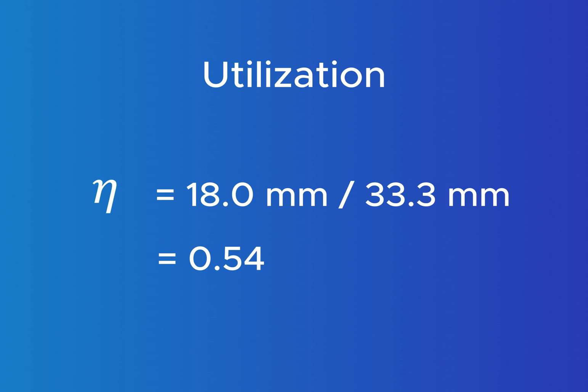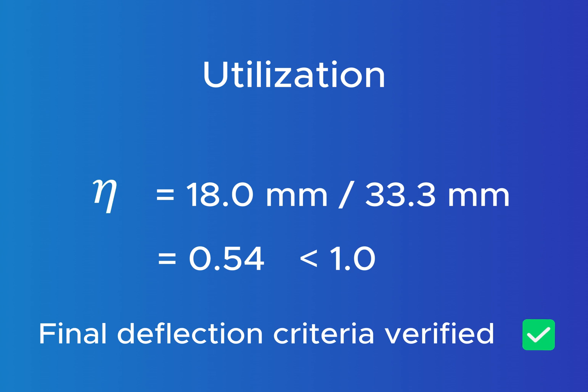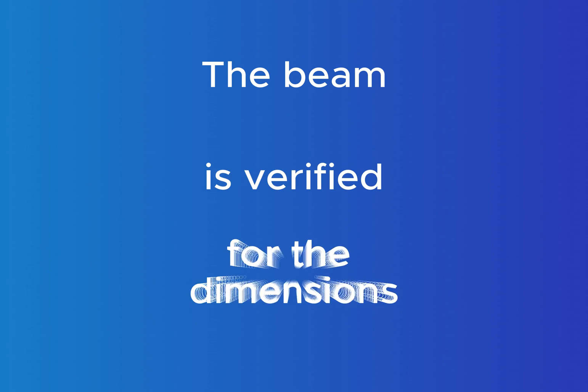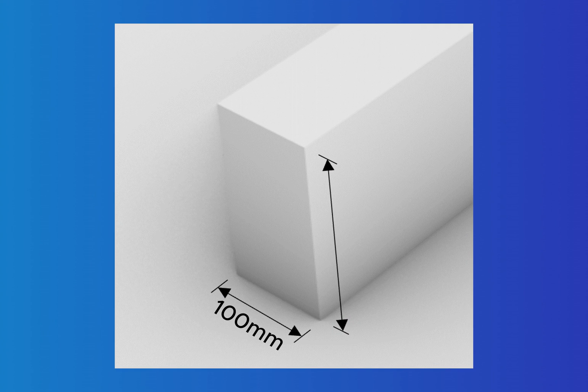Finally we calculate the final deformation by adding the creep deformations to the instantaneous deformation. This leads to a utilization of 0.54, and therefore the final deflection criteria is verified and the whole beam is basically verified for the dimensions of 100 millimeters in width and 240 millimeters in height.